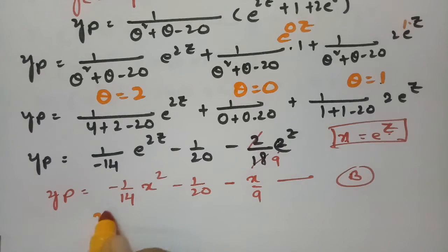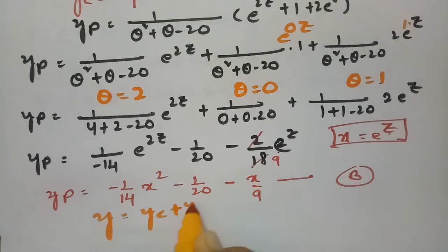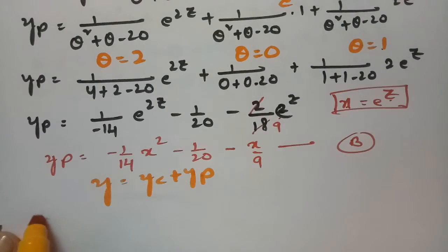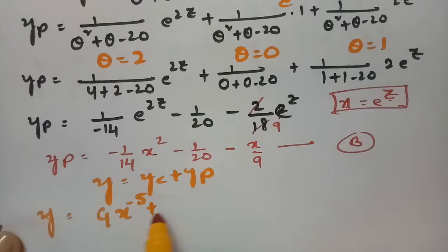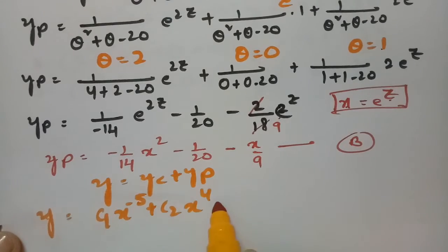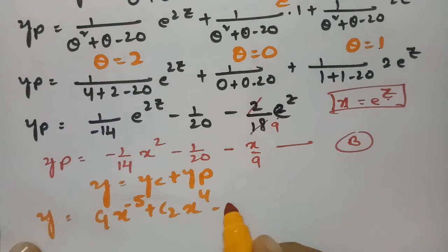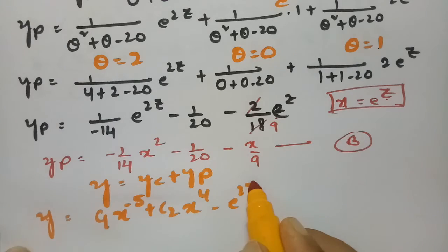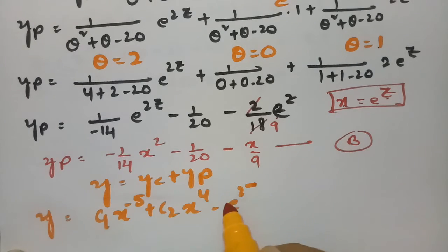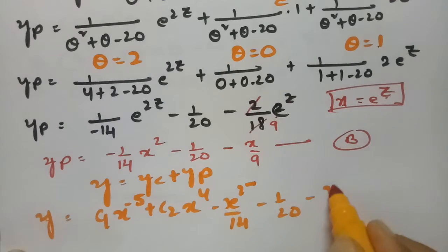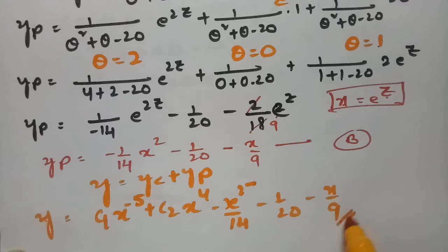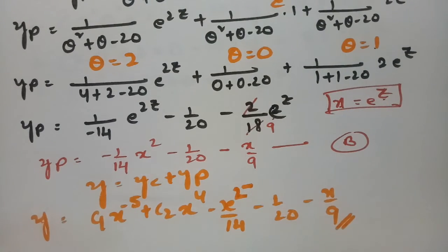Therefore the general solution is y = yc + yp: y = c1·x^(−5) + c2·x^4 − x²/14 − 1/20 − x/9. This is the final answer, and this is how we solve — first the complementary factor, then the particular integral.